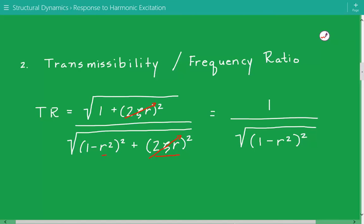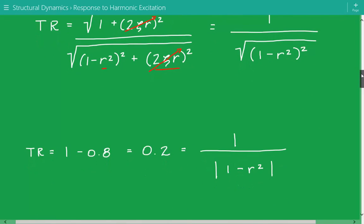So what we're left with is 1 divided by the square root of 1 minus r squared squared. This can be further simplified—1 minus r squared squared is just 1 minus r squared—so we're left with 1 divided by 1 minus r squared, and we put an absolute value on this bottom term because transmissibility has to be a positive value.